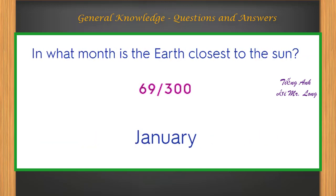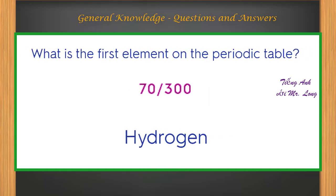In what month is the Earth closest to the Sun? January. What is the first element on the periodic table? Hydrogen.